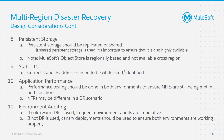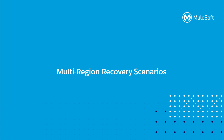Finally, auditing of both the primary and secondary environments is crucial to ensure that the previously discussed configurations are adhered to. The last thing you want is to discover during a disaster that firewall rules were modified in one environment and not the other. We should be proactive and continually audit environment configurations to ensure they are in sync. As you can see, setting up multi-region deployments is not something that should be taken lightly, but it can be highly effective when implemented correctly.